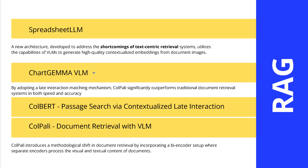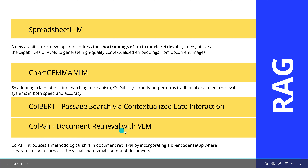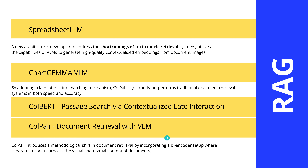And then the next step was to look at a mechanism already at the BERT system at the language branch — Colbert — officially from 2020, a passage search via a contextualized late interaction mechanism. And now we use this late interaction mechanism and bring it over to our vision language model for what we know currently as the best document retrieval methodology with a vision language model, called ColPali. ColPali introduces a methodological shift in document retrieval by incorporating a bi-encoder setup where separate encoders process the different modality content of our documents.